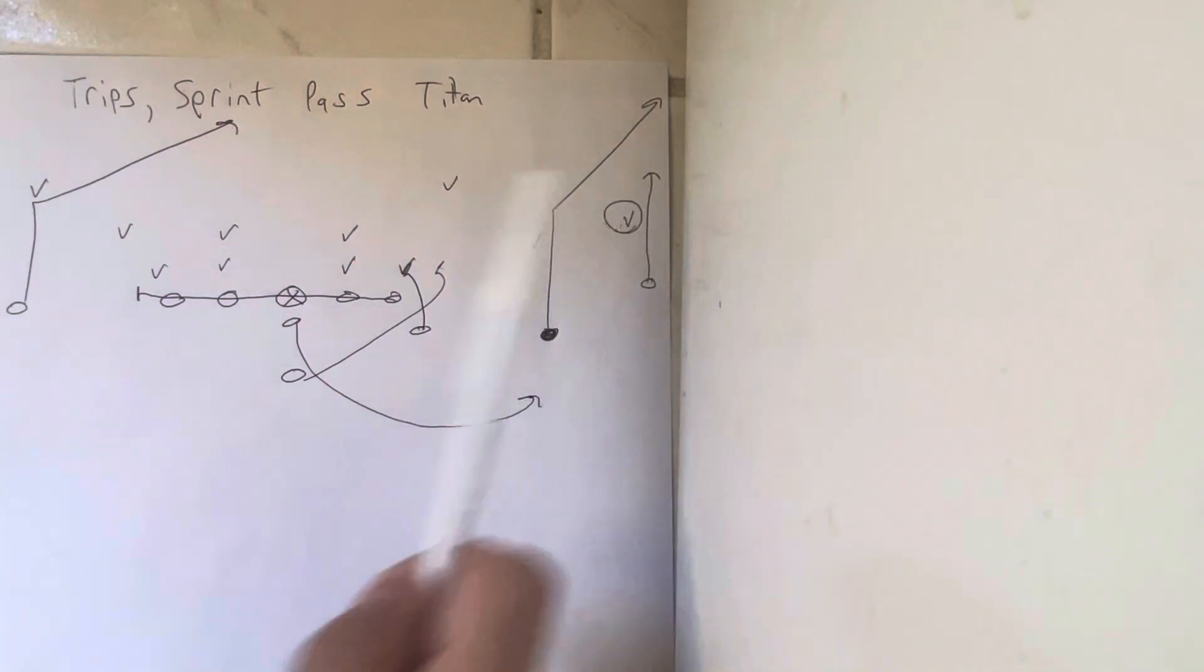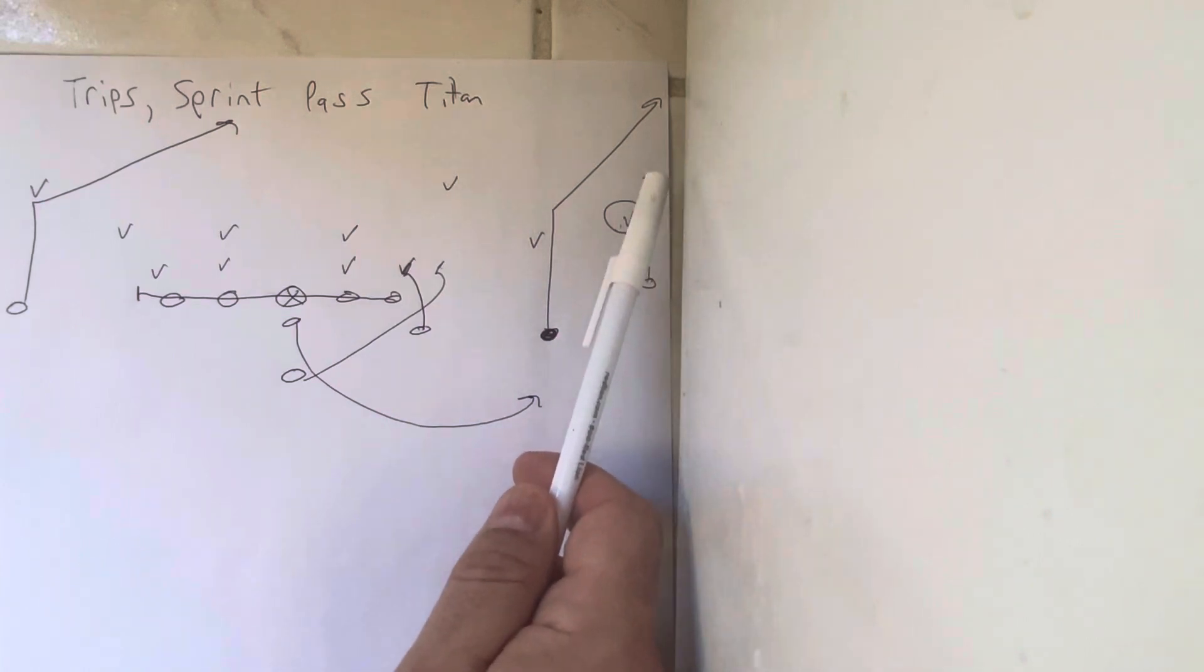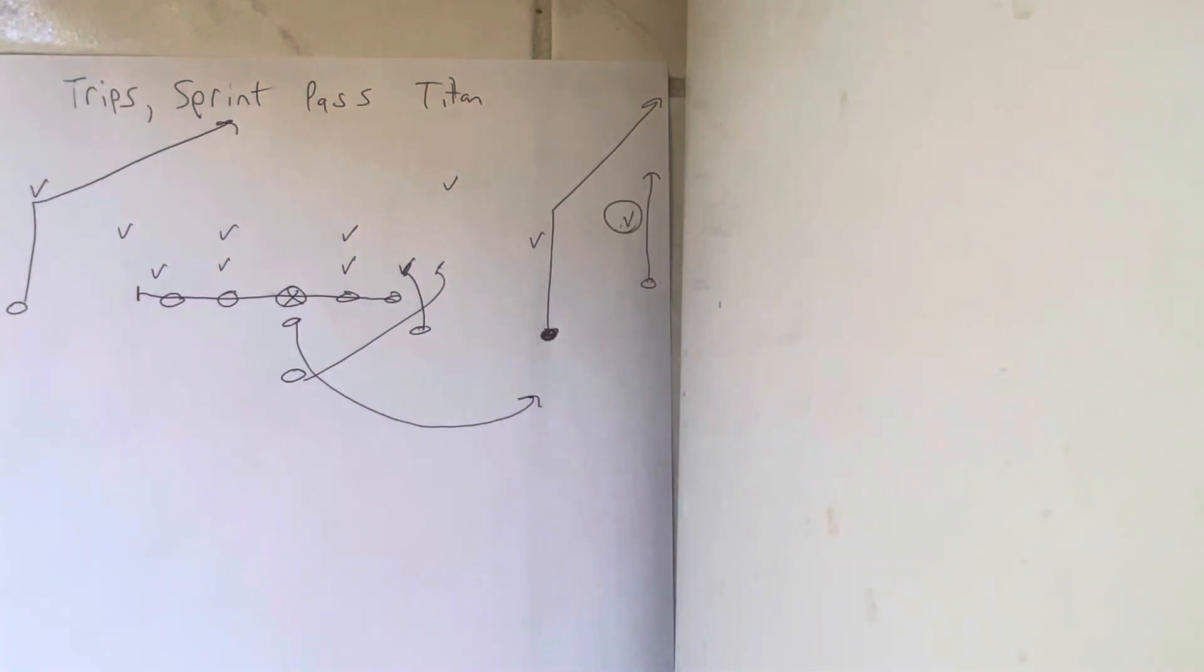This receiver is going to run eight yards down the field. He's going to stop and turn his belly button to the quarterback. And he's going to make sure that when he stops, he starts working slightly inside and back to the quarterback. Because a stop route, he's stopping at eight yards, but his body doesn't stop because if you do that, inertia takes over.